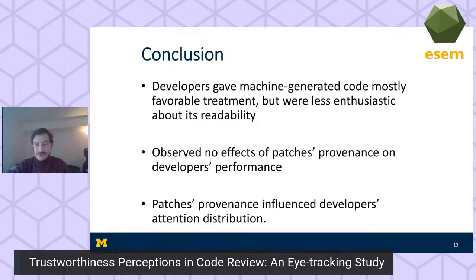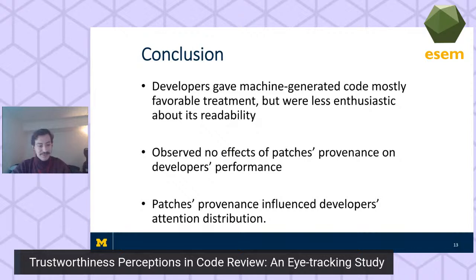For patches labeled machine-generated, participant fixation times were generally highest when looking at unit tests. For those labeled human-generated, fixation times were highest when looking at the actual patch code itself. Because participants rated machine-generated code as less readable, they may have been drawn to read the tests, which in our study were all human-generated. Developers gave machine-generated code mostly favorable treatment but were less enthusiastic about readability. We noticed an effect on developers' attention distribution — it could mean developers prefer to evaluate APR-generated code by examining human-generated test cases, without sacrificing much efficiency.